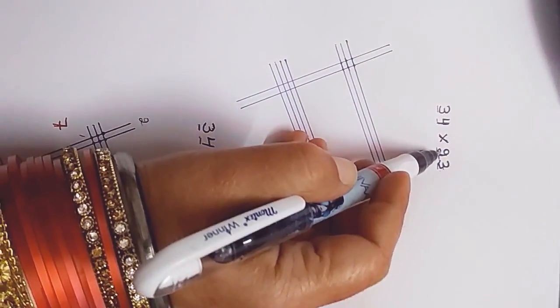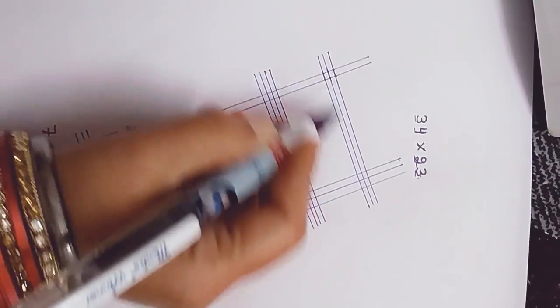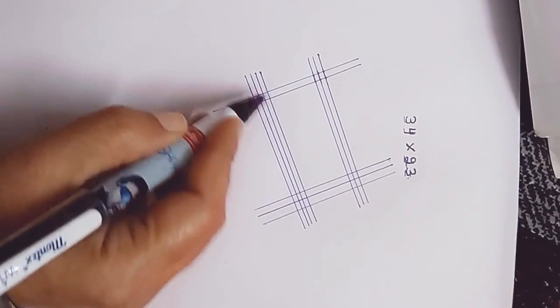Now let us start by taking an example that is 34 × 23. So we have to draw three lines and give some space, after that draw four lines like this.